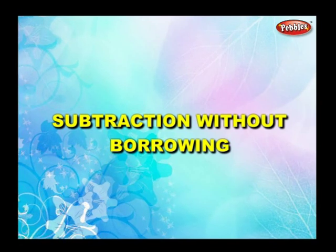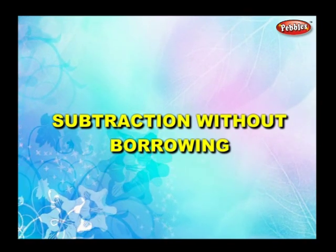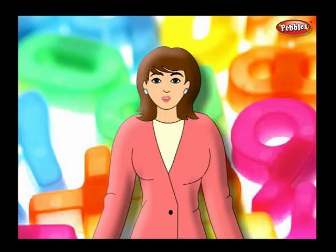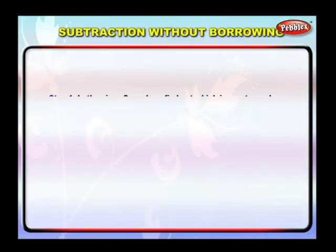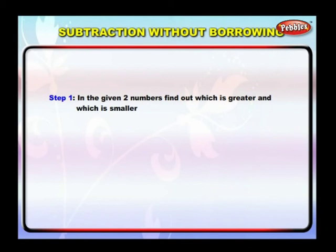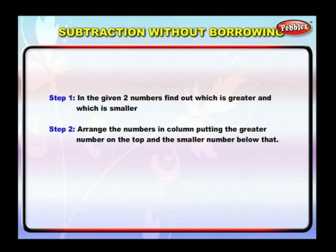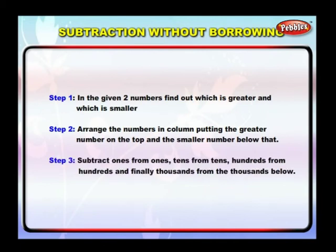Subtraction without borrowing. Let us first learn subtraction without borrowing. Step 1: in the given two numbers, find out which is greater and which is smaller. Step 2: arrange the numbers in a column, putting the greater number on top and the smaller number below. Step 3: subtract ones from ones, tens from tens, hundreds from hundreds, and thousands from thousands.